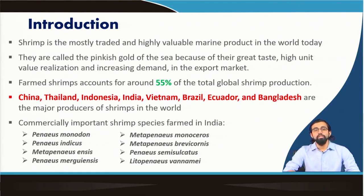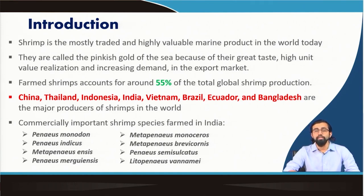The major countries responsible for farmed shrimp production are China, Thailand, Indonesia, India, Vietnam, Brazil, Ecuador, and Bangladesh.